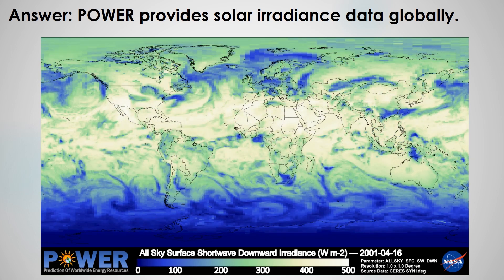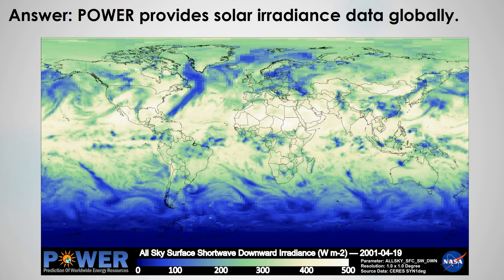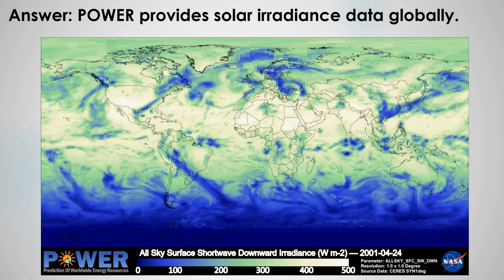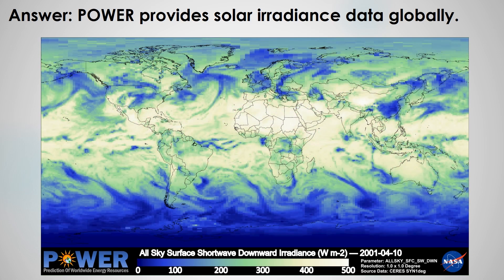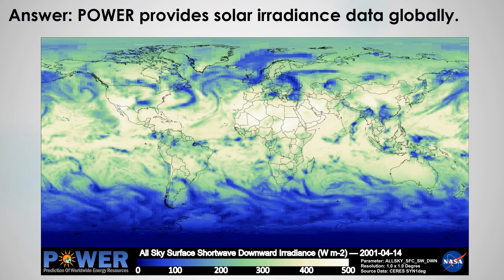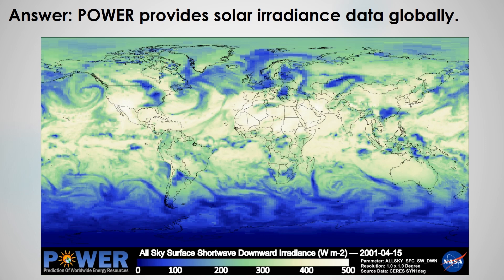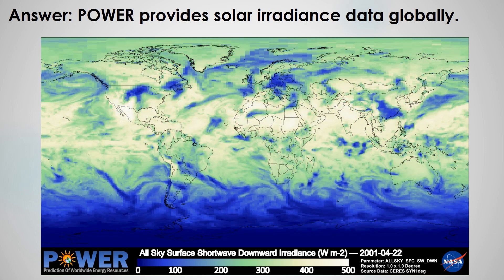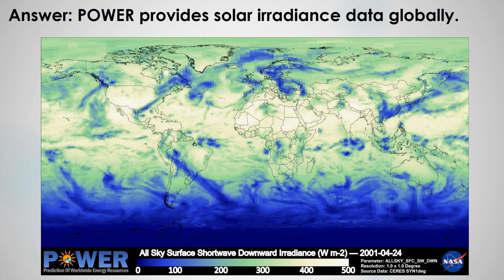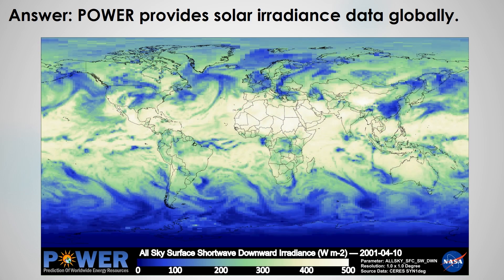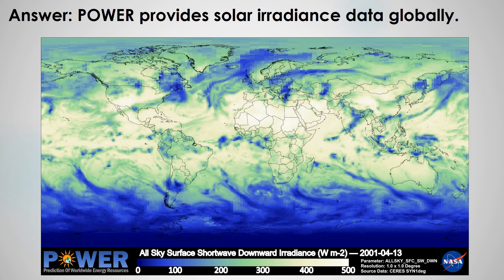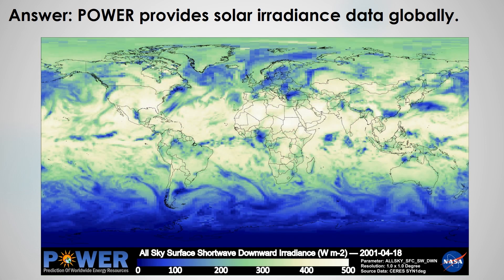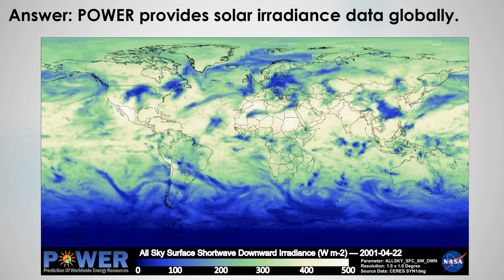Power provides solar irradiance data globally. This is a measure of the amount of solar energy that hits the Earth's surface. Power provides solar irradiance and other data parameters as hourly, daily, monthly, annual, and climatological based products, specifically designed to answer questions for building design.